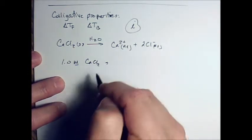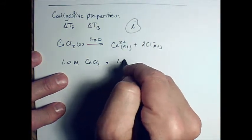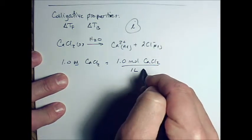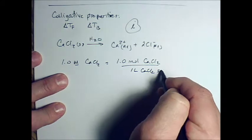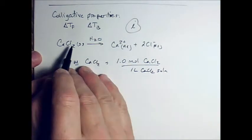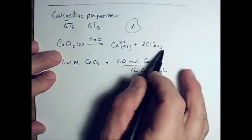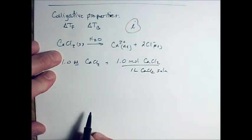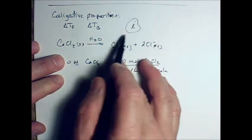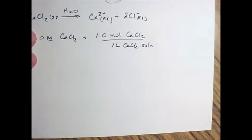All right, let's say I've got a one molar solution of calcium chloride. By definition, that is 1.0 moles of calcium chloride in one liter of calcium chloride solution, right? All right, for every mole of this, how many moles of particles do I have? For every mole of this stuff, how many moles of particles do I have? Three, right?